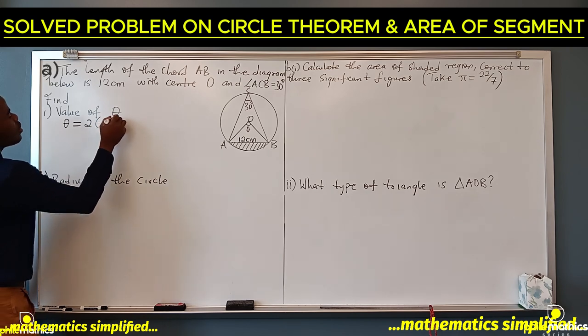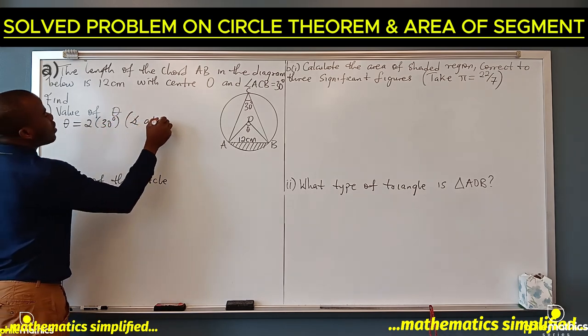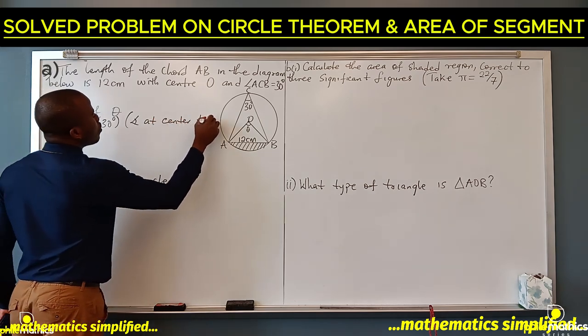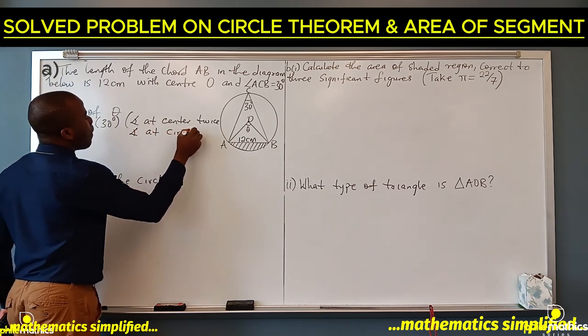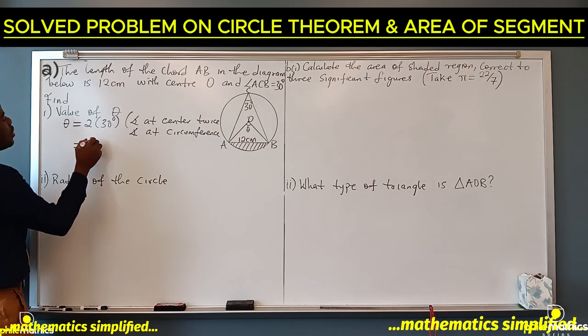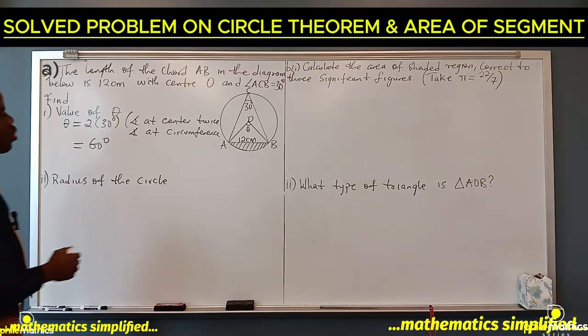So theta will be twice 30 degrees. The reason is angle at center is twice angle at circumference. So two times that is 60 degrees.